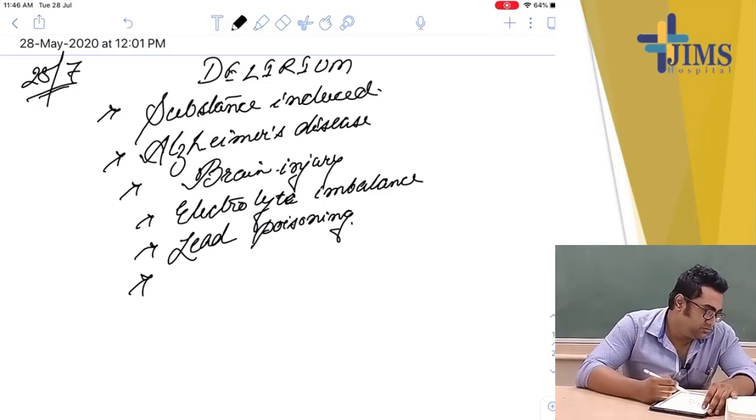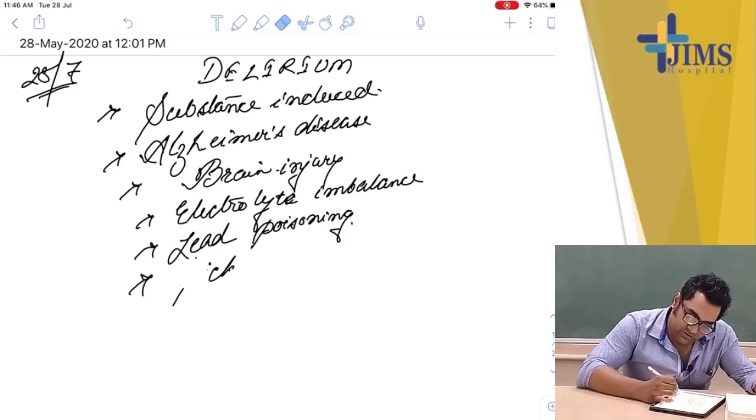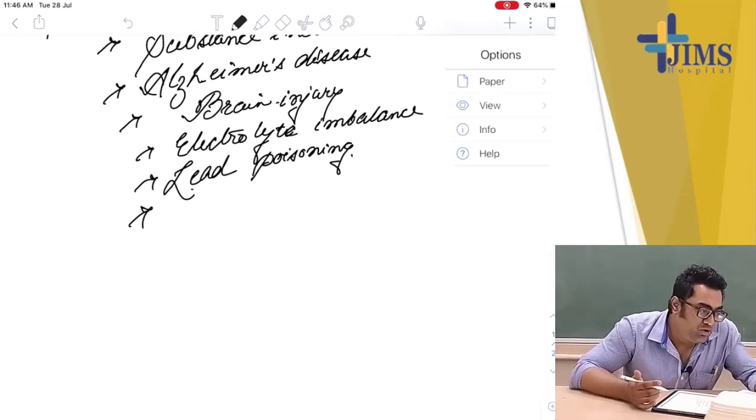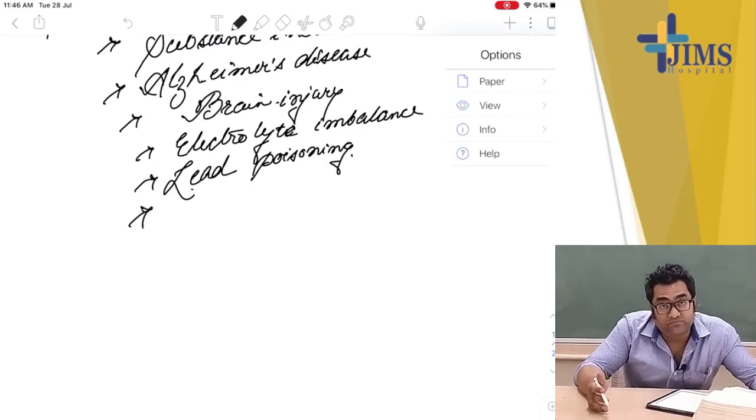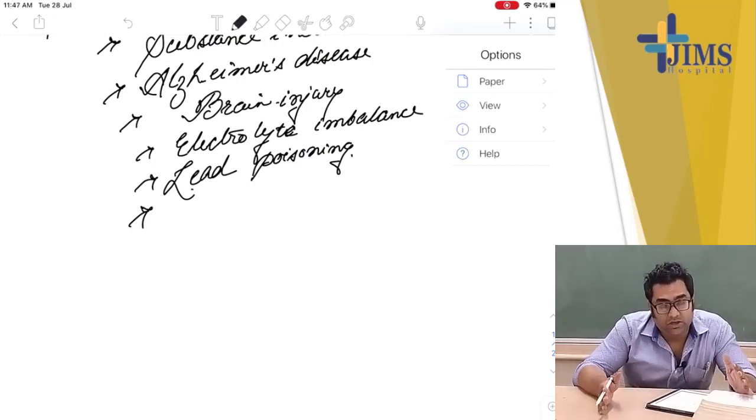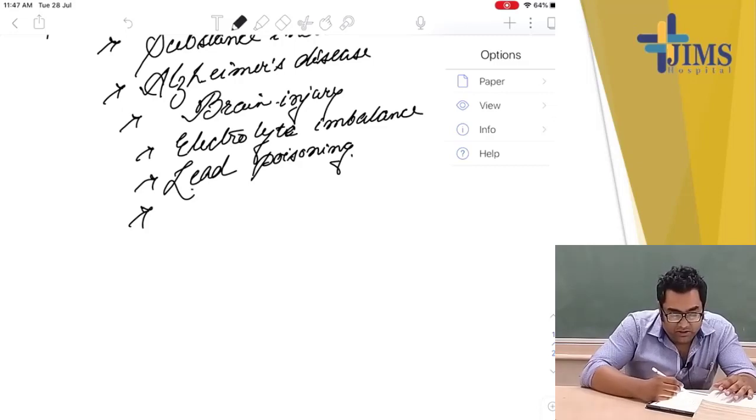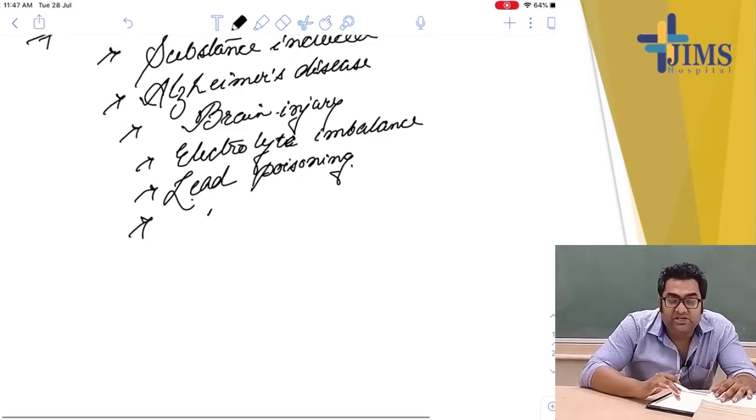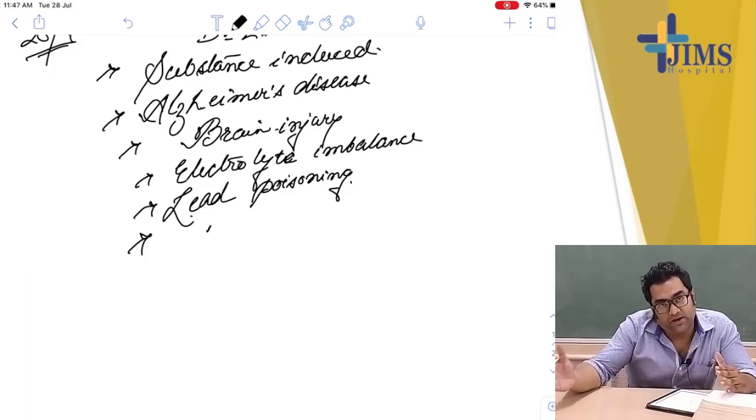Parkinson's disease, heavy metal poisoning. There are over 100 causes of delirium, so we need to do a lot of tests and screening to understand the cause. Delirium is a symptom not a diagnosis. It is a symptom which is found because of some other organicity or psychotic problem.